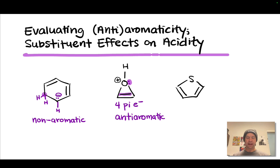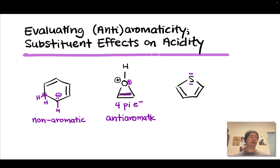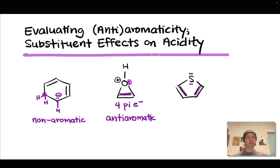The key thing to notice again is that the lone pair on oxygen is occupying a pi orbital and is engaged in conjugation — that lone pair goes into the pi electron count. The molecule on the right is thiophene, and the sulfur atom has two lone pairs. The molecule is cyclic and planar because it is fully conjugated, so it's either aromatic or anti-aromatic. To determine which, we need to consider the pi electron count. The carbon-carbon pi bonds each count for two, but we have a question of how to handle the lone pairs on sulfur.